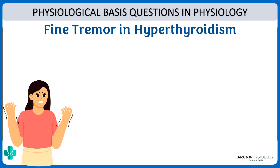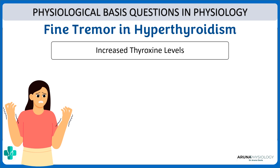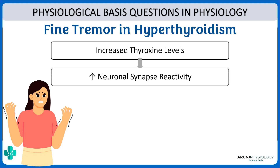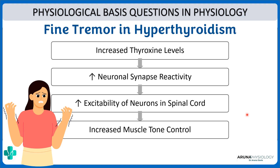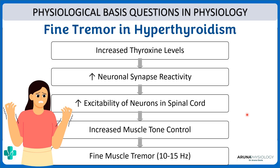Why is there fine tremor in hyperthyroidism? That is because of the effect of thyroid hormone on the synapses and central nervous system. With increased thyroxine levels there is increased neuronal synapse reactivity, meaning increased excitability of neurons in the spinal cord. This causes increased muscle tone control and thereby fine muscle tremor of around 10 to 15 Hz. All muscles are receiving more input, causing this fine muscle tremor due to the increased excitability of neurons.